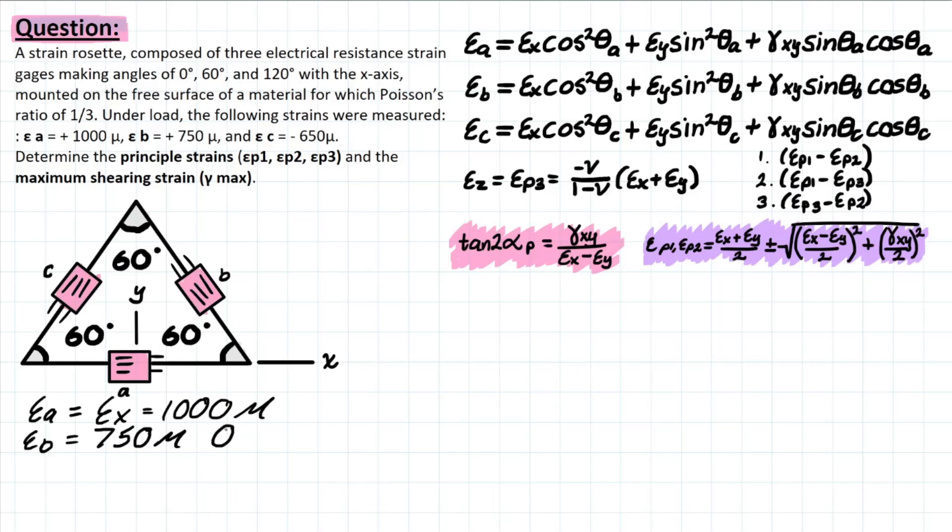And then the angle for epsilon_b is going to be important now, because we don't have a particular axis that it's aligned with. So what is our theta_b going to be? Well, theta_b, as I said, should be with respect to the x-axis.